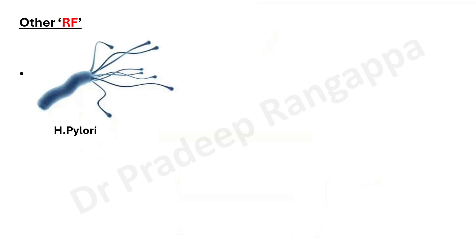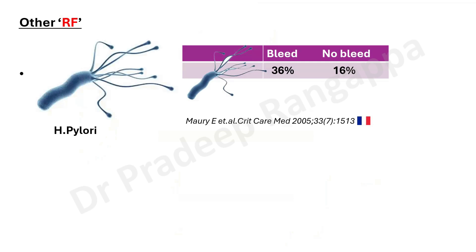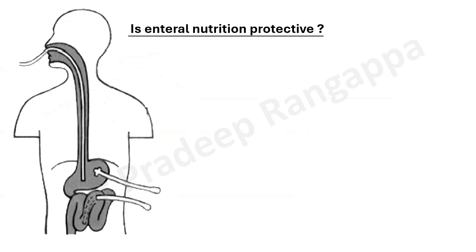An important correlation of stress ulcers is H. pylori infection. A French study found that 36% of H. pylori-positive patients had stress ulcers and bled in ICU. An Australian study showed 23% of H. pylori-positive patients bled, compared to 13% who did not have H. pylori. Clearly, patients with dormant H. pylori infection are at a much higher risk of stress ulcers and GI bleed when admitted to the ICU.